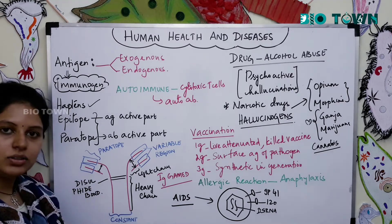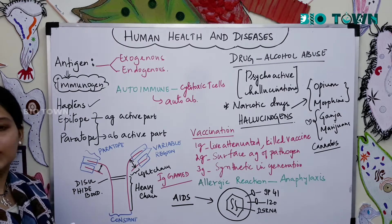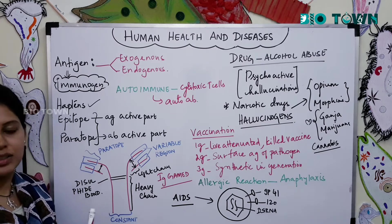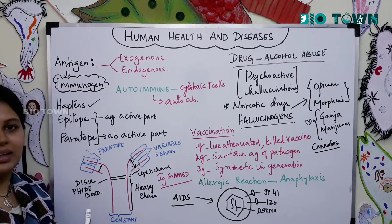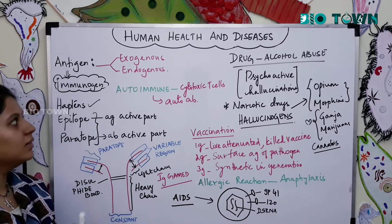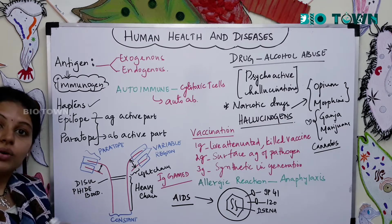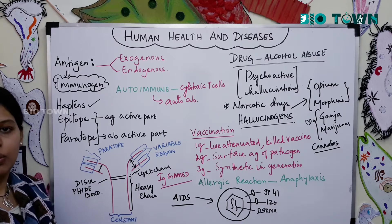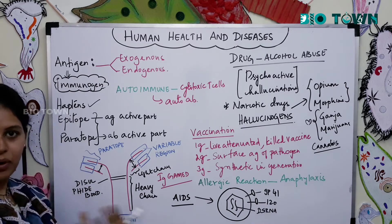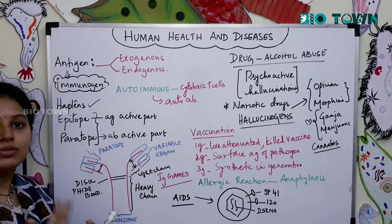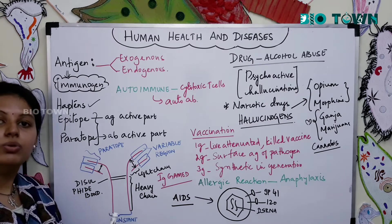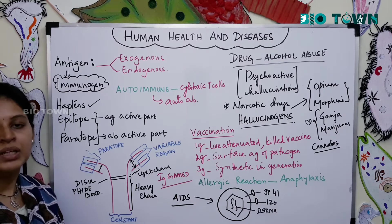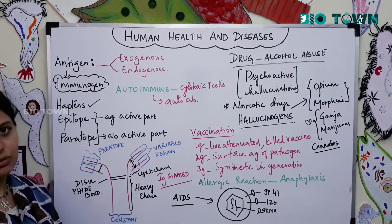Antigens are nothing but foreign agents. They could be any pathogens, any microbes, or any other foreign particles — for example, a dust particle or a pollen particle. They are all considered as antigens. Antigens are of two types: exogenous antigens, which enter the body from the outside world, and endogenous antigens, which are already present in the body but suddenly transform themselves as a foreign particle.